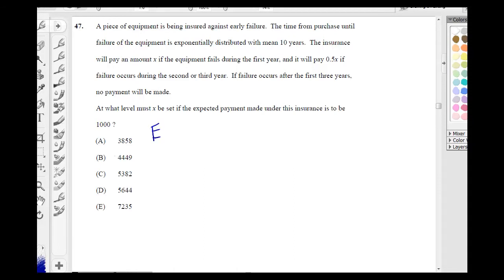We know that E of t is 10 years, which means that lambda, our parameter, is 1 tenth, which means that our PDF is going to be 1 tenth e to the negative t divided by 10.